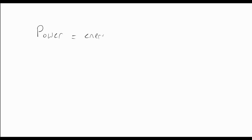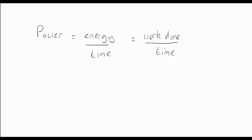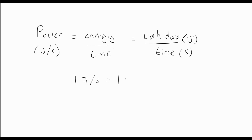And that's pretty much all there is to power. Just remember: power is always equal to the energy used divided by the time it was used in. Energy is equal to work done, so sometimes people write the equation as work done divided by time — depending on the question, you choose whichever version suits. The units are joules divided by seconds, so power is always measured in joules per second, which are often abbreviated to watts.